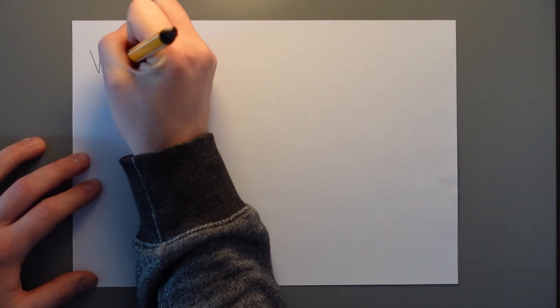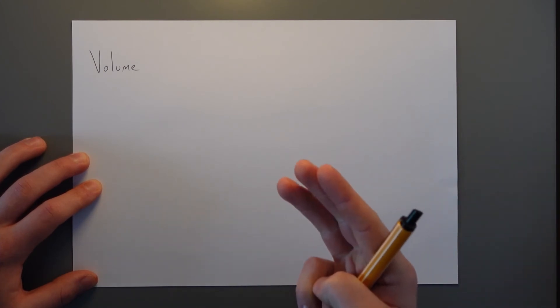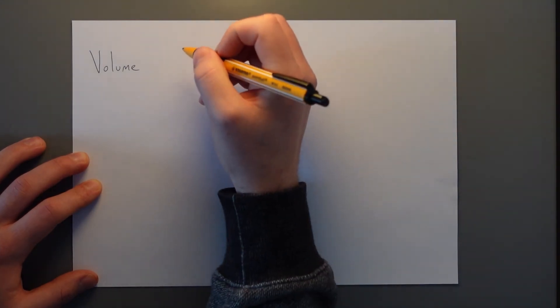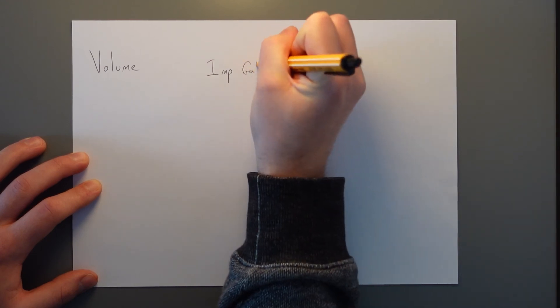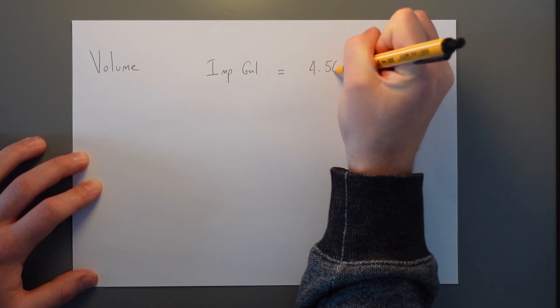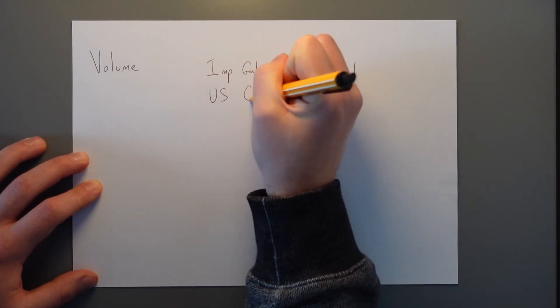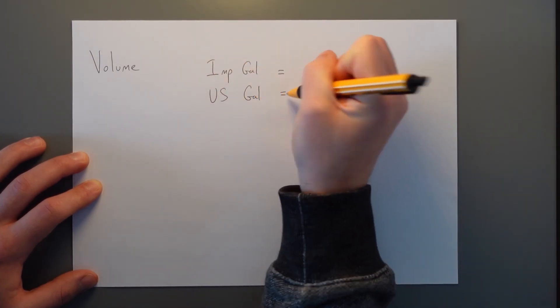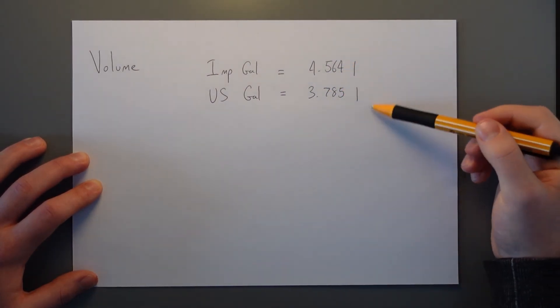The next unit of measurement to talk about is volume. Volume is measured in three ways in aviation. We have liters, imperial gallons, and US gallons. So an imperial gallon is equal to 4.564 liters. And a US gallon is equal to 3.785 liters. Those are the two conversions that we need.